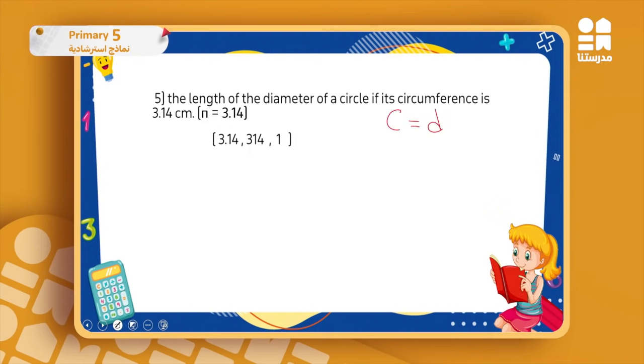So the circumference, if it is 3.14, equals d times π. I will take it to the other side divided by each other, so d equals 1.